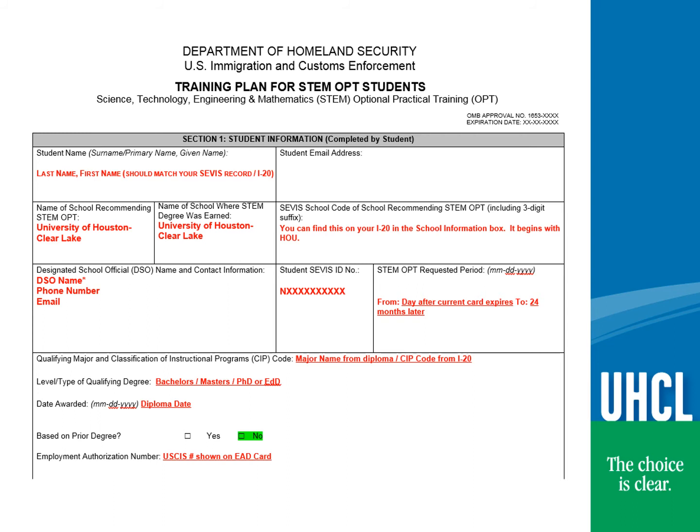For the DSO name, please refer to our webpage at www.uhcl.edu/international for current staff and alphabet breakdown. Please enter the name and contact information of the advisor currently responsible for your SEVIS record. This may or may not be the same as who is currently listed on your I-20. The STEM eligible CIP code can be found on your I-20 in the Program of Study box under Major. For the Based on Prior Degrees section, the answer will be no if you wrote UHCL in the Name of School where STEM degree was earned box. If you apply for STEM based on a previously earned degree from another institution, then the answer will be yes.